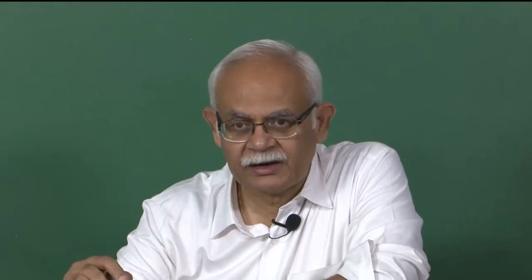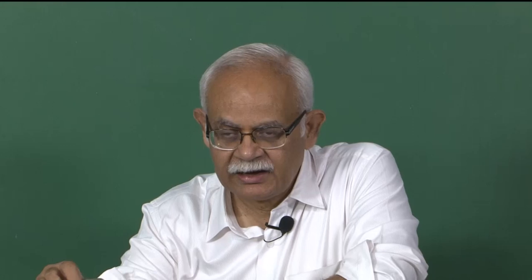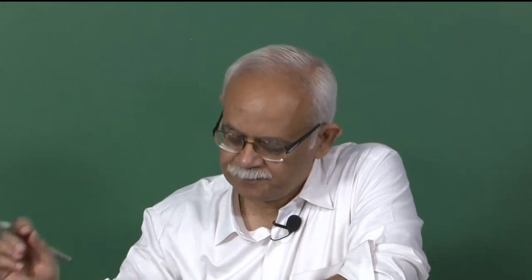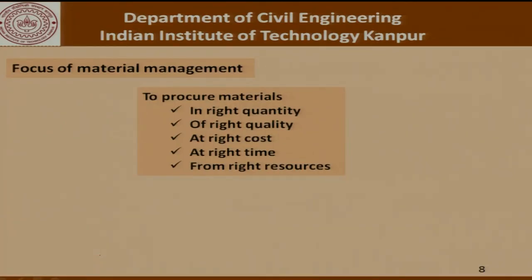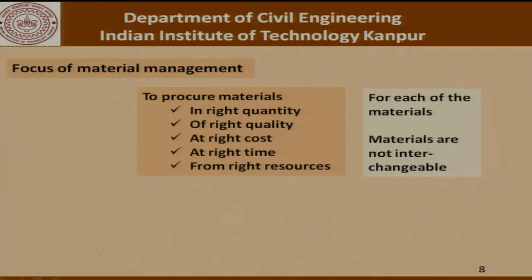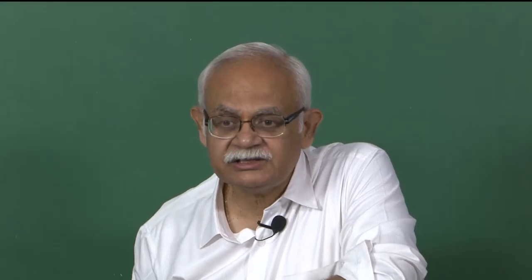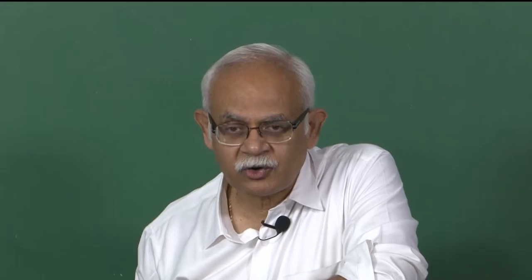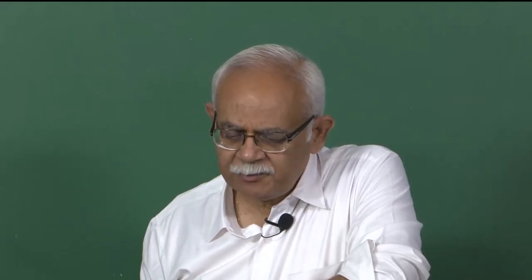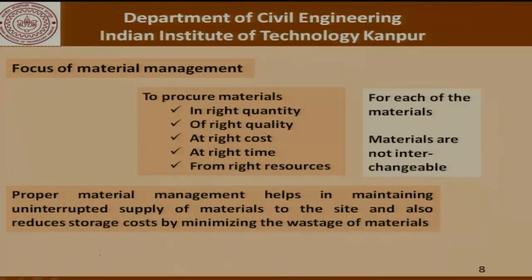We must know when a particular material is going to be used in the project and then plan for its procurement at the right time from the right sources. These issues have to be sorted out for each material involved, and materials are not interchangeable. You cannot simply say: I don't have a 16 mm steel bar, can you use a 22 mm bar? In certain cases it can be done, but that puts needless effort on the site and could cause delays. Proper material management helps in maintaining an uninterrupted supply of materials to the site and also reduces storage cost by minimizing wastage.